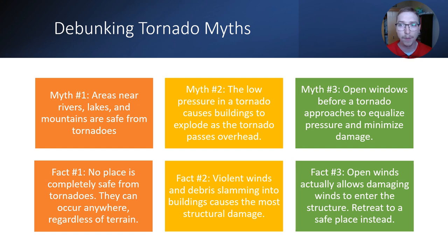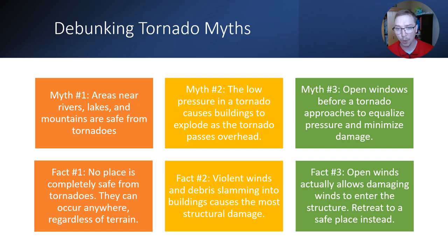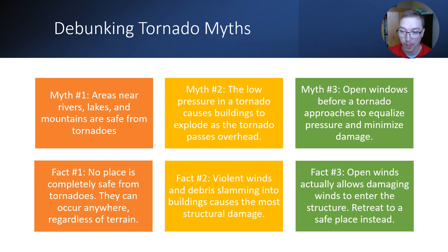Debunking a couple of tornado myths. Myth one: areas near rivers, lakes, and mountains are safe. No — no place is completely safe from tornadoes; they can occur anywhere regardless of terrain. There's even a story of a tornado that went up and over a mountain in Yellowstone. Myth two: the low pressure in a tornado causes buildings to explode as it passes overhead. No — violent winds and debris slamming into the building cause the majority of structural damage. Myth three: open windows before a tornado to equalize pressure. No — open windows actually allow damaging winds to enter the structure. Retreat to a safe place instead.